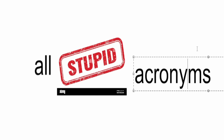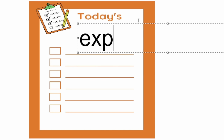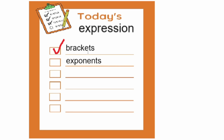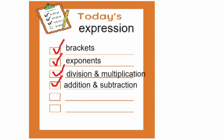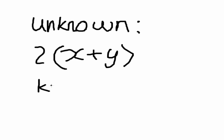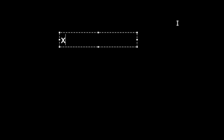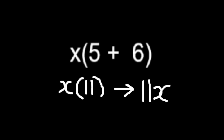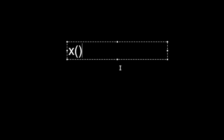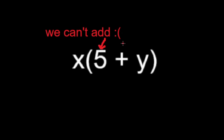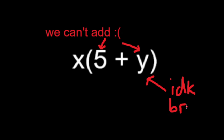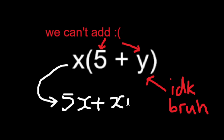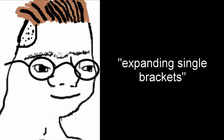All stupid acronyms that mean the exact same thing. In expressions, the calculation process is: brackets come first, then exponents, then multiplication, then division, then addition and subtraction. But what does it mean for brackets to come first? It depends if the expression has unknown variables within the brackets or not. For an expression like x(5 plus 6), you would add the known values within the brackets, then expand it by multiplying by x. But for something like x(5 plus y), we can't add 5 to y because we don't know what y is, so we just do the expansion to get 5x plus xy. This is known as expanding single brackets.